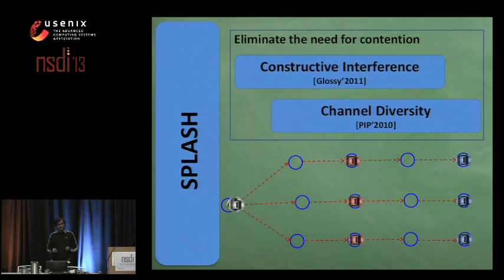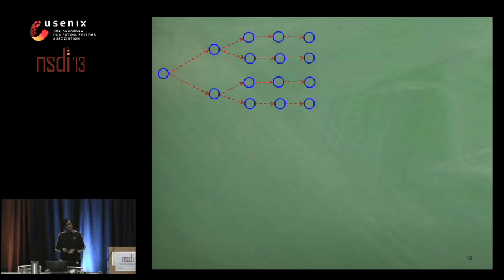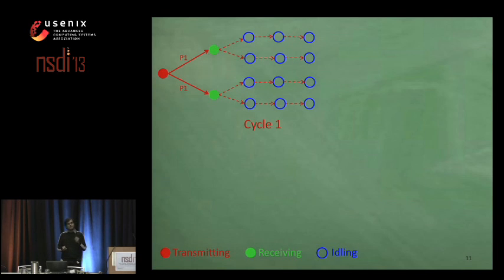Before we go into its details, let me tell you that we call this tree pipelining, and it works as follows. Given a dissemination tree, the root node transmits the first packet in the first pipeline cycle, and we make sure that this packet is received by only first-hop nodes.